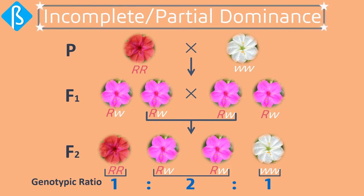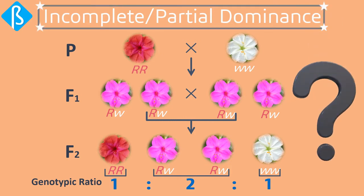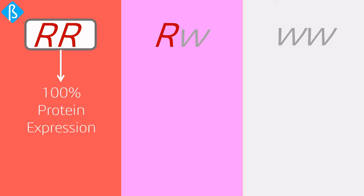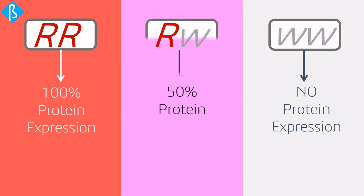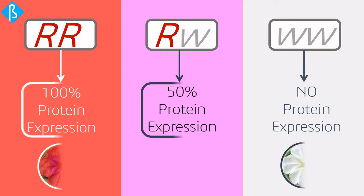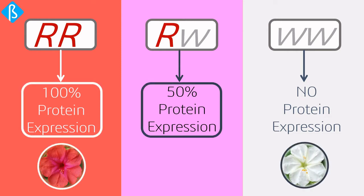If you find it fascinating, the molecular explanation is even more interesting. At the molecular level, the allele that causes the red phenotype expresses a functional protein required for pigmentation, while the allele for white phenotype lacks protein expression. In a heterozygous individual where both alleles are present, only 50% functional protein is produced, and that is not sufficient to give a red phenotype, because 50% of functional protein cannot accomplish the same level of pigment synthesis that 100% protein can.